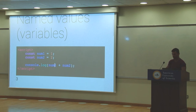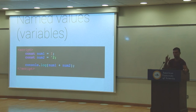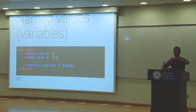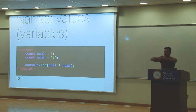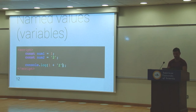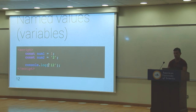If num2 were a string '2' instead of the number 2, what would console.log(num1 + num2) print? Twelve — because the plus operator, if it has text on either side, concatenates them. It takes 1 and the text '2', sees there's text on one side, and sticks them together to produce '12'.